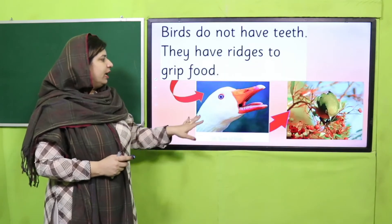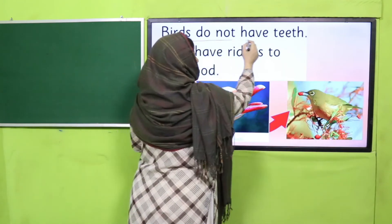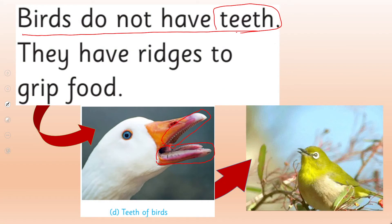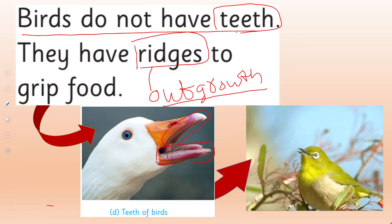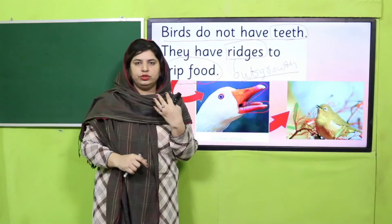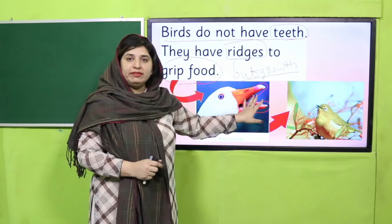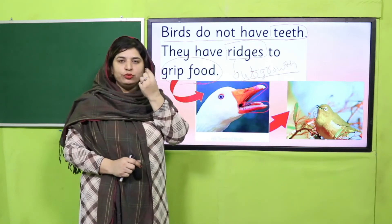In the case of birds, what kind of teeth do birds have? Birds do not have properly developed teeth. Instead, birds have ridges — outgrowths inside their mouth — which help them to grip the food. Birds are then able to swallow and chew their food in their own way. So birds do not have properly developed teeth; they have small ridges or outgrowths present.